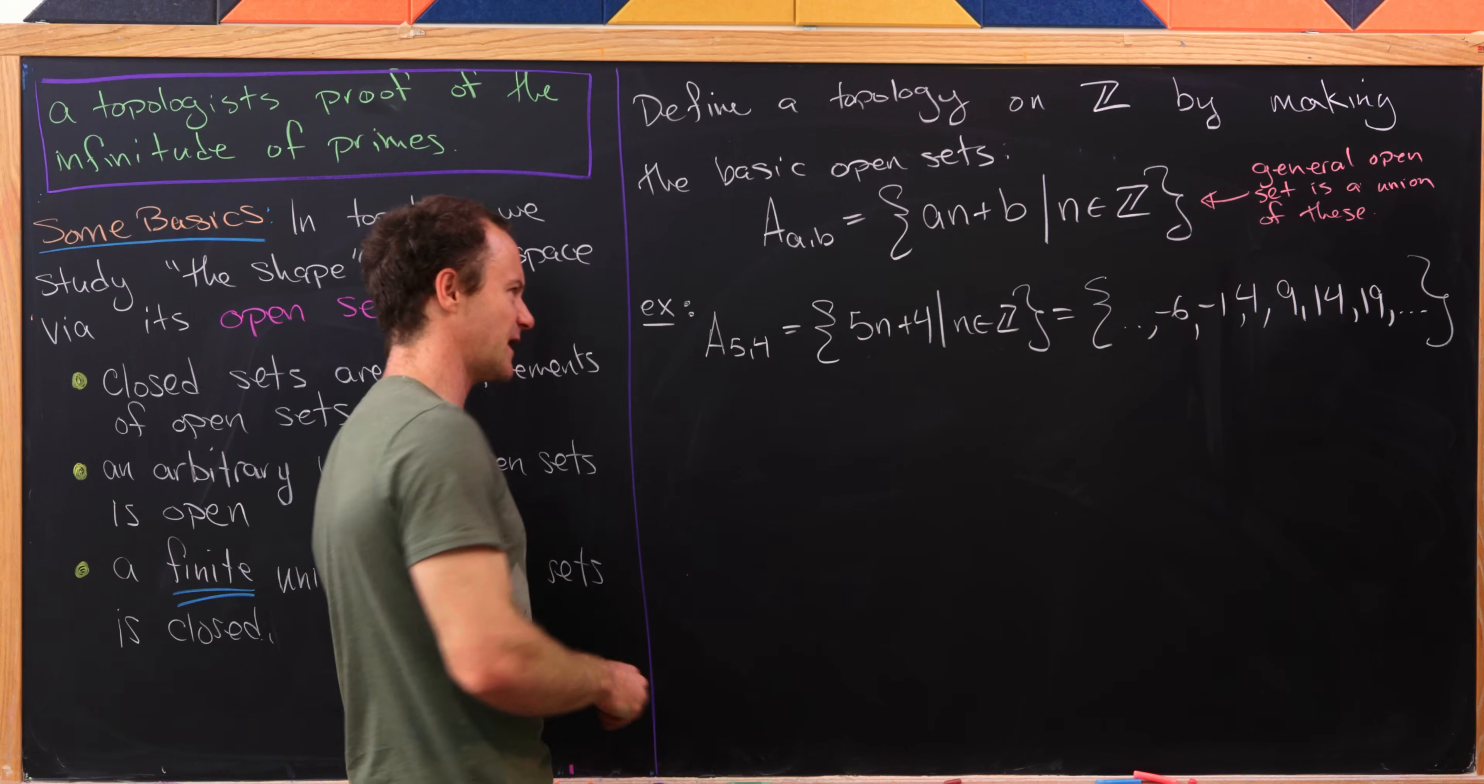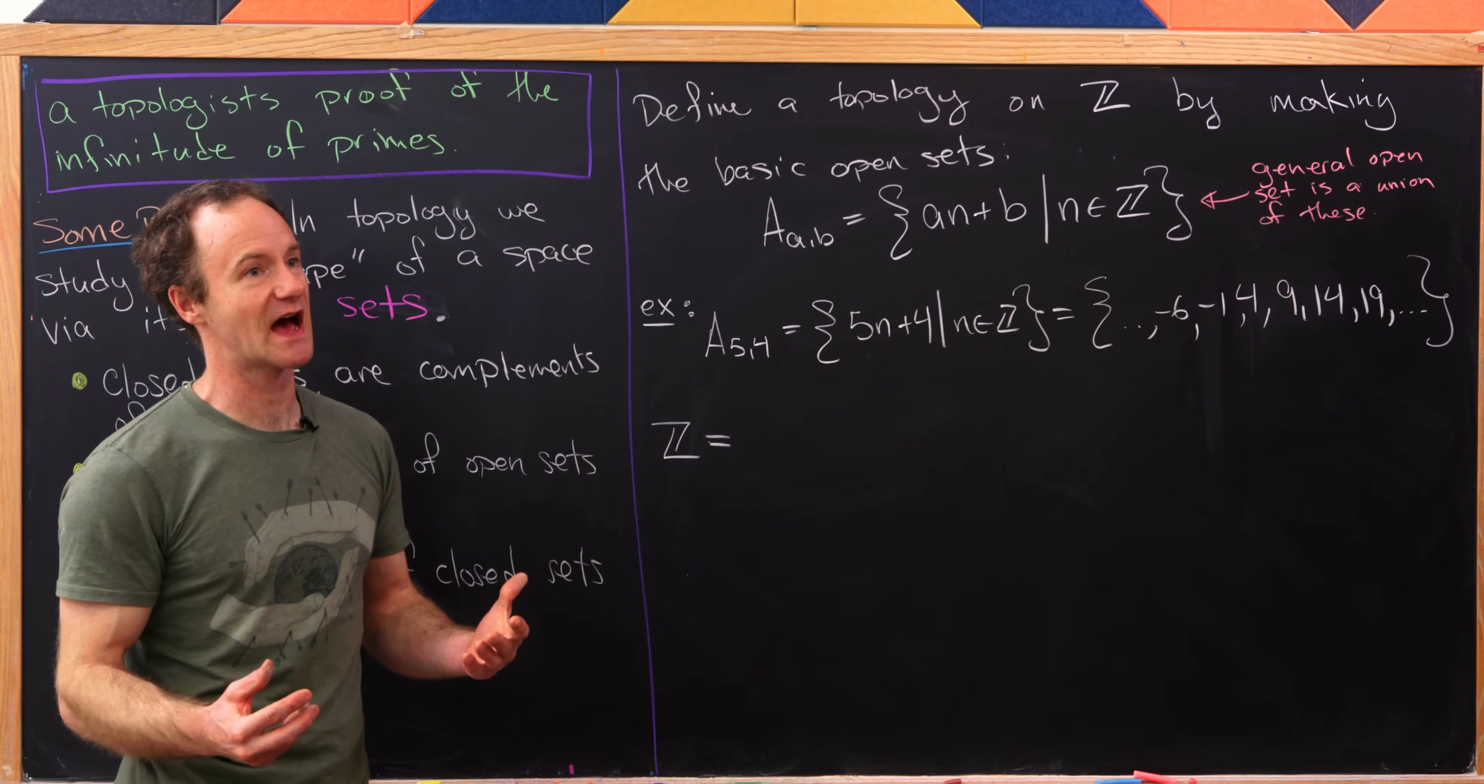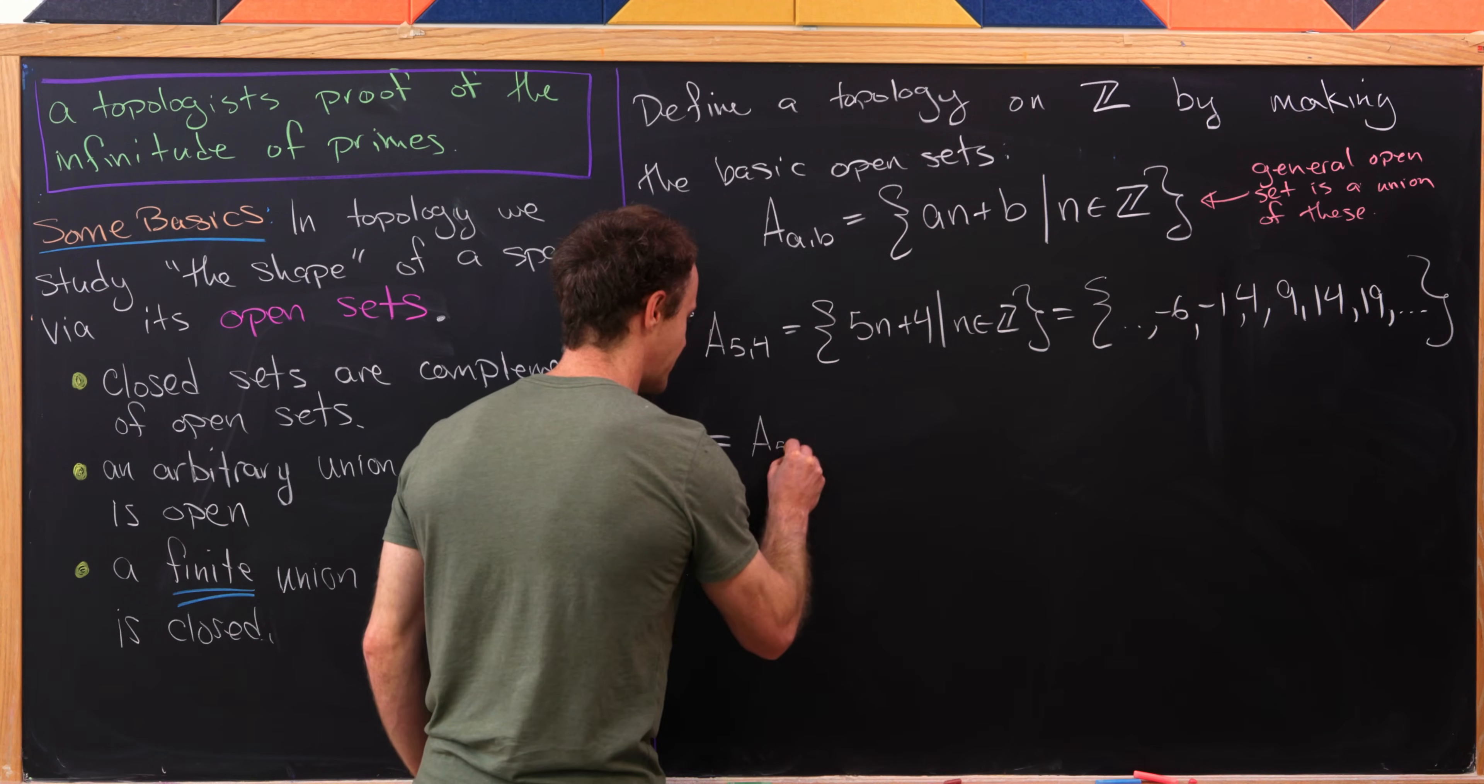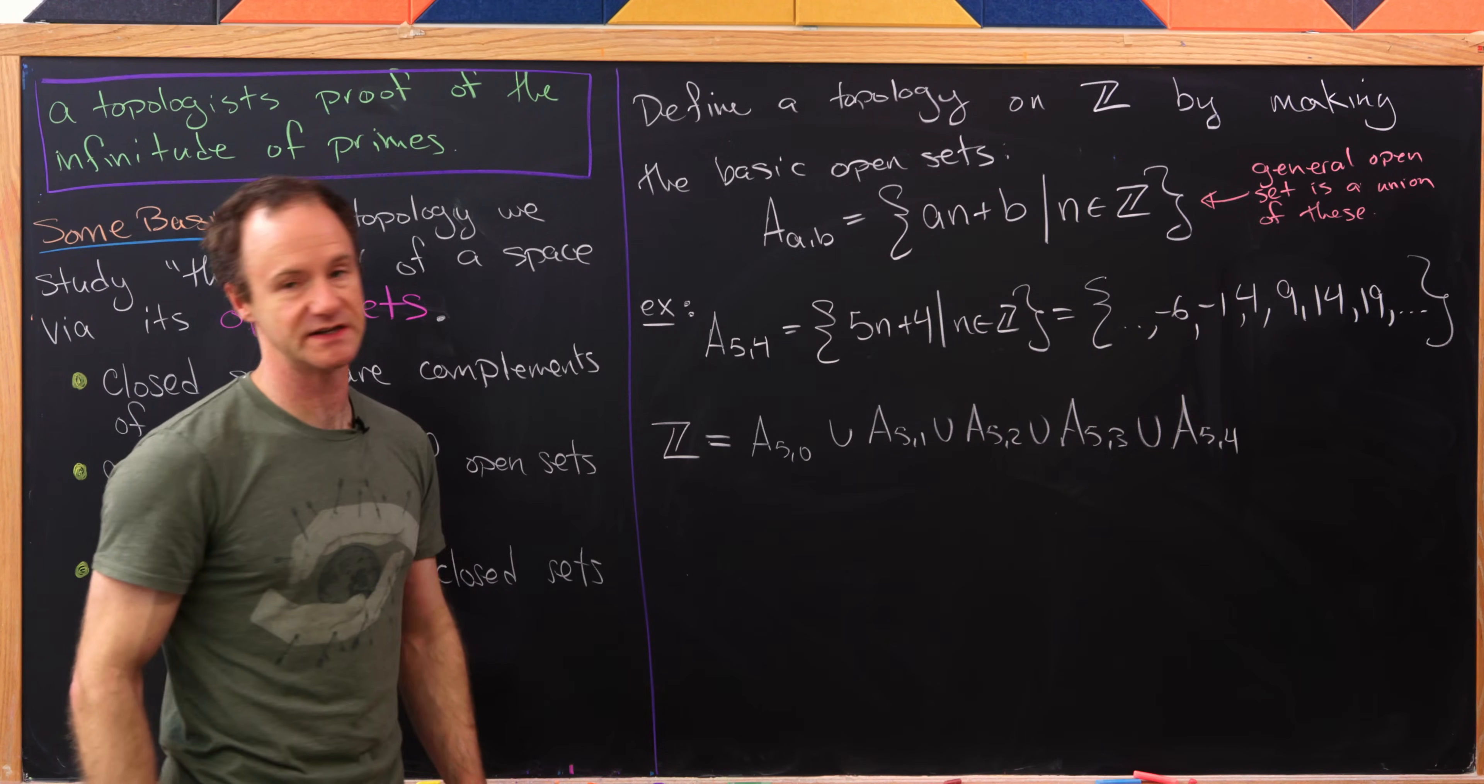Okay. So now I'd like to point out we can make the following observation. The whole set of integers can be written as a union of these A type sets pretty easily. And this is maybe motivated by the fact that the equivalence classes mod n partition the integers. That's exactly what's about to happen right here. So notice we have A50 union A51 union A52 union A53 union A54 makes up the whole integers.